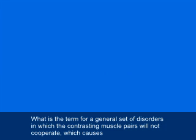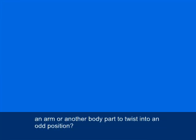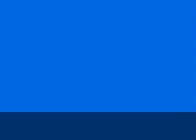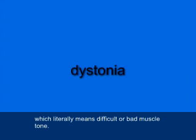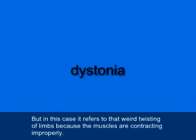What is the term for a general set of disorders in which the contrasting muscle pairs will not cooperate, causing an arm or another body part to twist into an odd position? Well, this disorder is dystonia, D-Y-S-T-O-N-I-A, which literally means difficult or bad muscle tone. In this case it refers to that weird twisting of limbs because the muscles are contracting improperly.